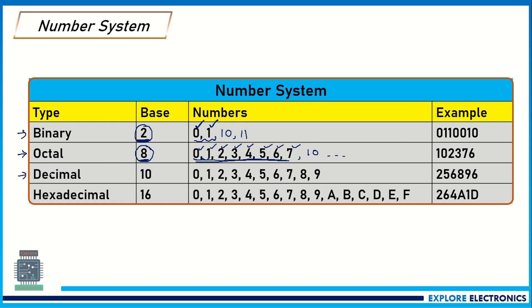Similarly, the decimal number system, as we use in day-to-day life, has a base of 10 — we have 10 different single-digit numbers. Hexadecimal also has a base of 16, represented as H. There are 16 different single-digit numbers, and after 9 you can observe A, B, C, D, E, F — these total 16 numbers form the base.